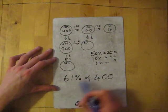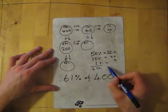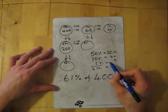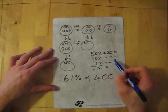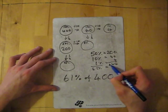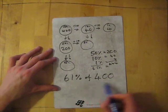And 1% I've got which is 4. All I need to then do to get to 61%, because these percentages equal 61, is add up these totals which gives me 244. So 61% of 400 is 244.